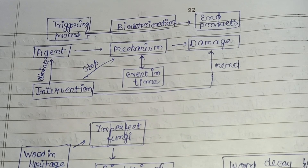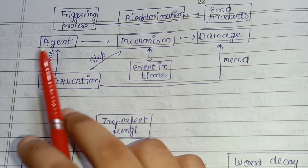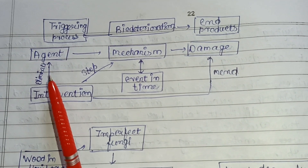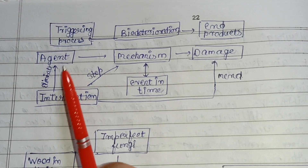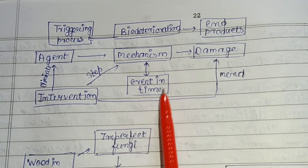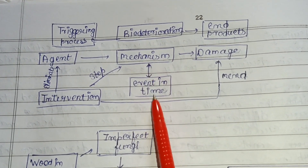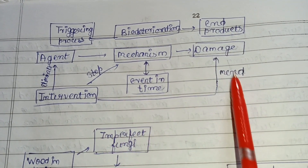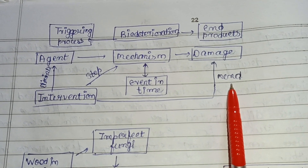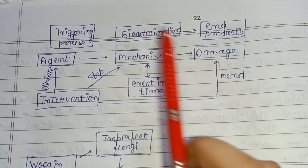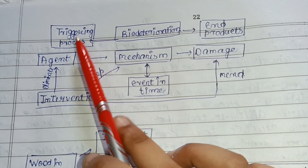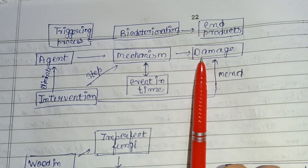This diagram represents the mechanism of action of bio deterioration agents: first the agent performs its mechanism, then damage to the product results. If at an early stage we intervene — eliminating the deteriorating agent — the mechanism is stopped in time, and damage could be amended. If triggering processes such as precipitation or a warm environment are provided, they cause the damage.